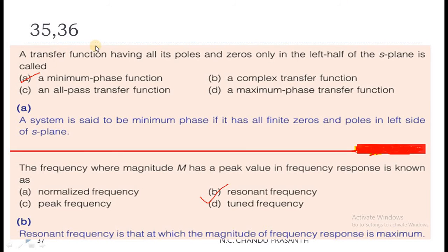Questions 35 and 36: A transfer function having all its poles and zeros only in the left half of the S-plane is called a minimum phase function. A system is said to be minimum phase if it has all finite zeros and poles in the left side of the S-plane.